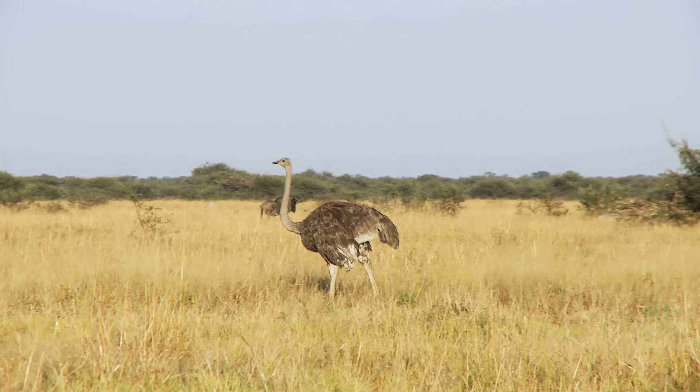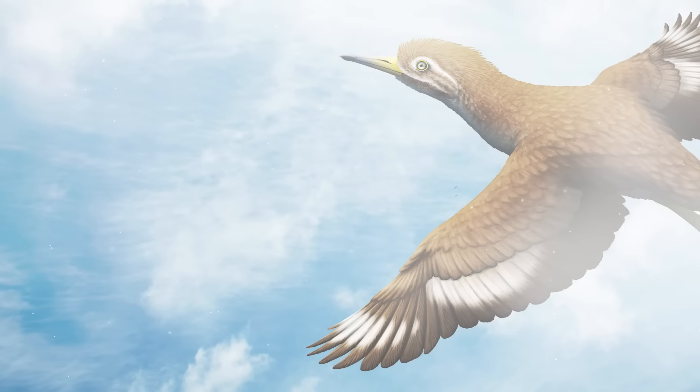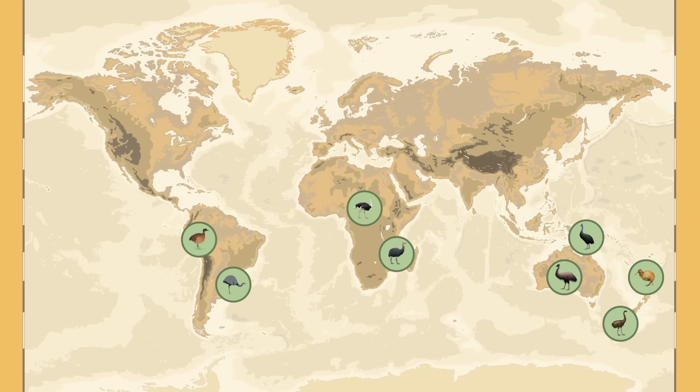But that would require that ratites flew to different continents and then became flightless multiple times, instead of just once. In fact, our new understanding of their family tree shows that all of the closest shared ancestors of ratites could fly. And that in turn means that ratites had to have independently lost the ability to fly at least six different times.